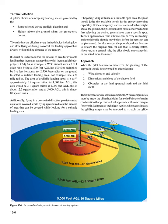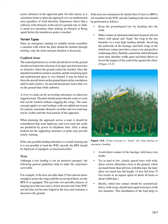Approach: When the pilot has time to maneuver, planning of the approach should be governed by three factors: (1) Wind direction and velocity, (2) Dimensions and slope of the chosen field, (3) Obstacles in the final approach path and the field itself. These three factors are seldom compatible. When compromises must be made, the pilot should aim for a wind/obstacle/terrain combination that permits a final approach with some margin for error. A pilot who overestimates gliding range may be tempted to stretch the glide across obstacles. It is sometimes better to plan the approach over an unobstructed area regardless of wind direction, as a collision with obstacles at the end of a ground roll is much less hazardous than striking an obstacle at flying speed before the touchdown point is reached.